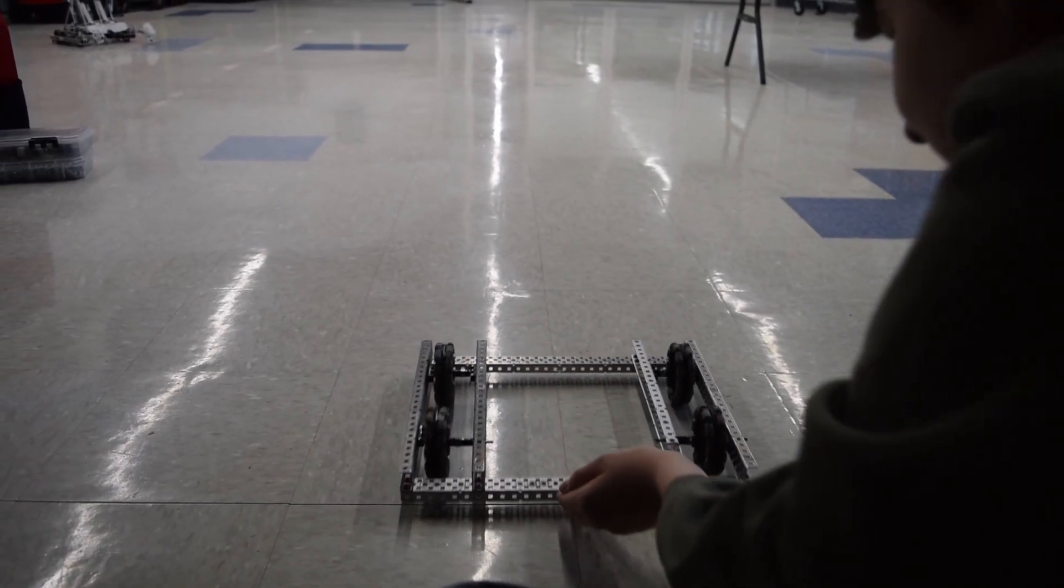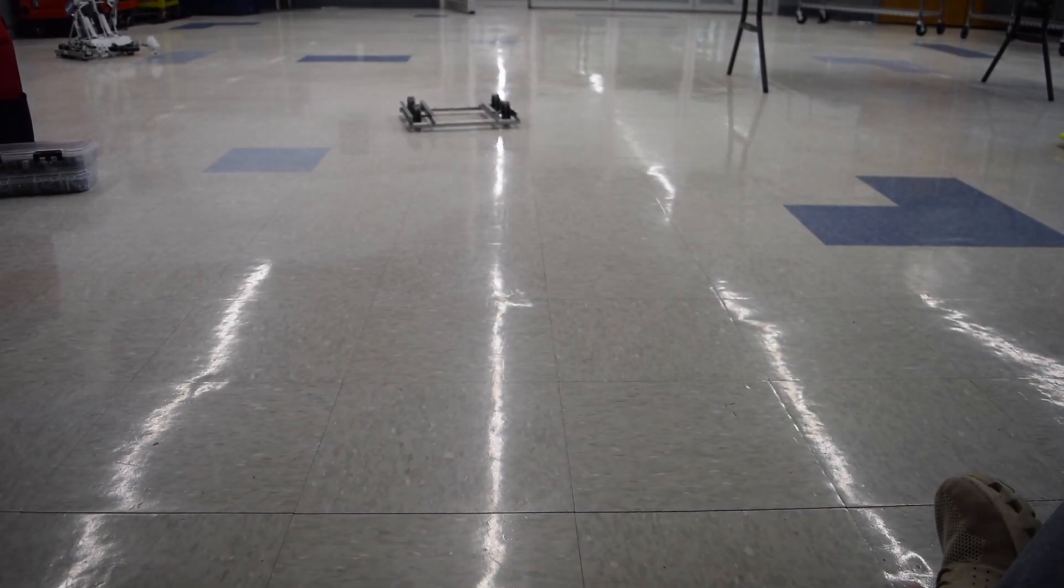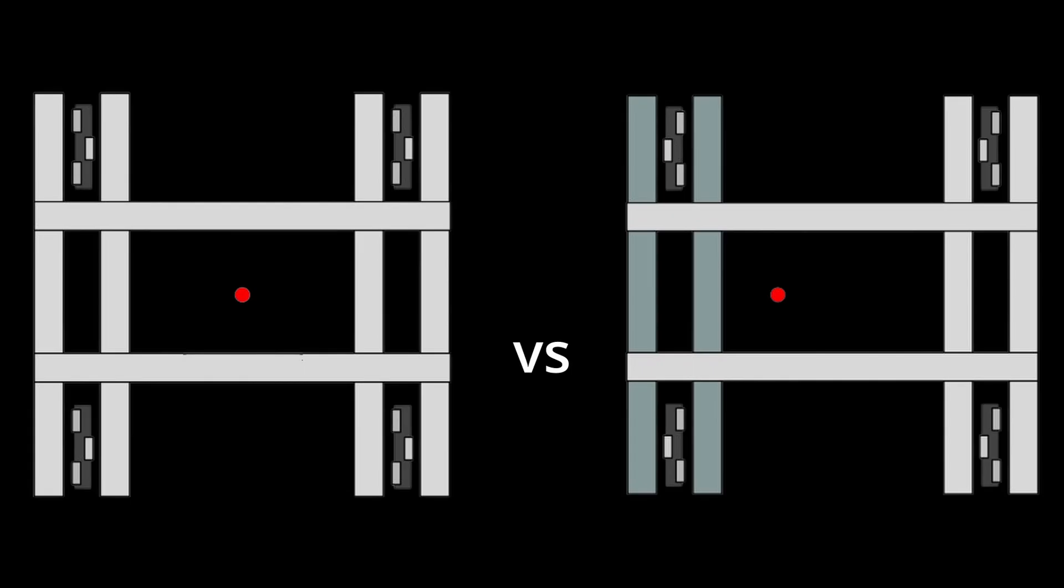As you can see, the basic chassis I built here drifts to the left when pushed straight because of the offset center of gravity.